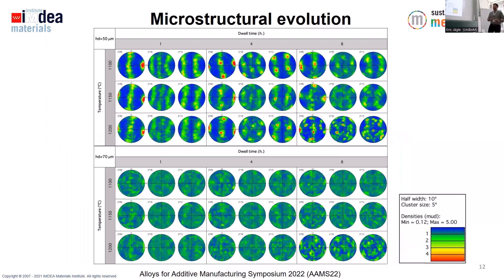Further indication of this is visible in the pole figures. For the 50 micron sample, the strong texture is maintained through most of the treatments — we see just single points of individual grains. In the case of the 70 micron sample, we have essentially no texture throughout the thermal treatments.